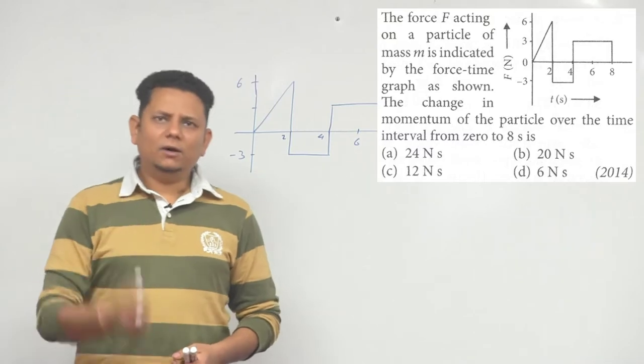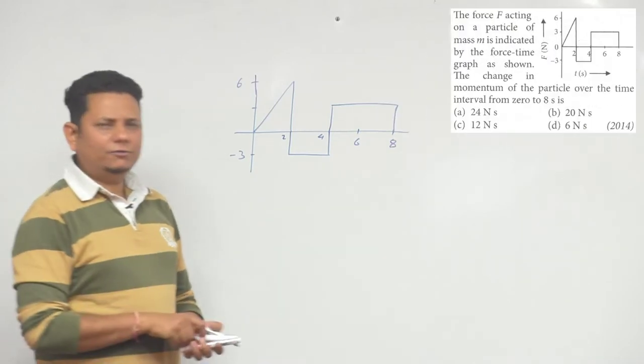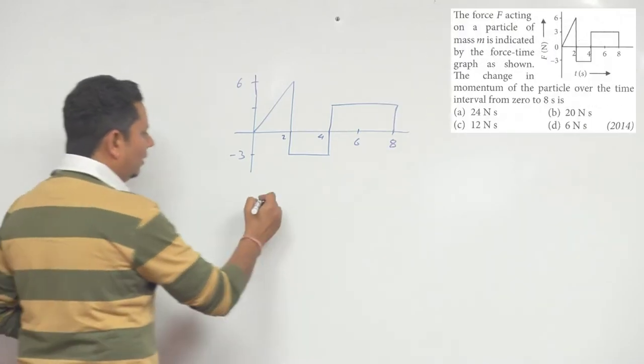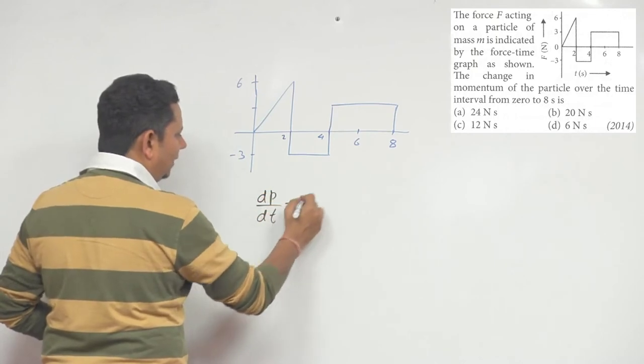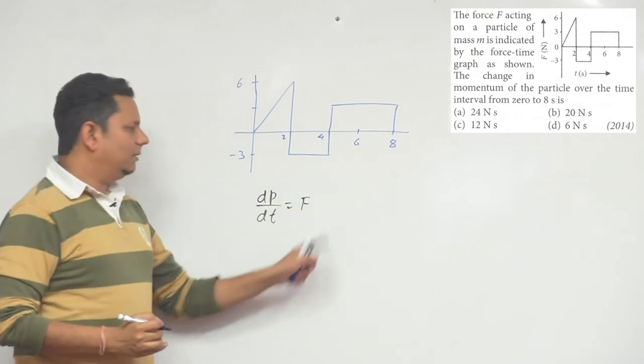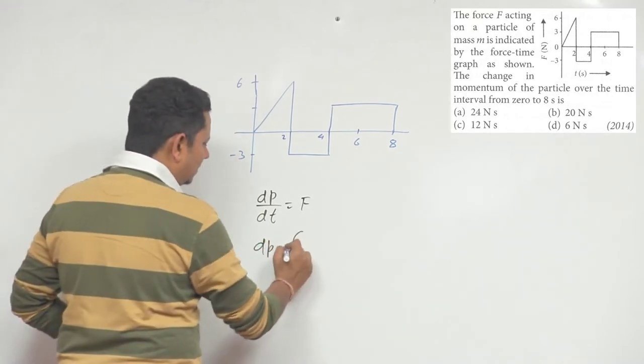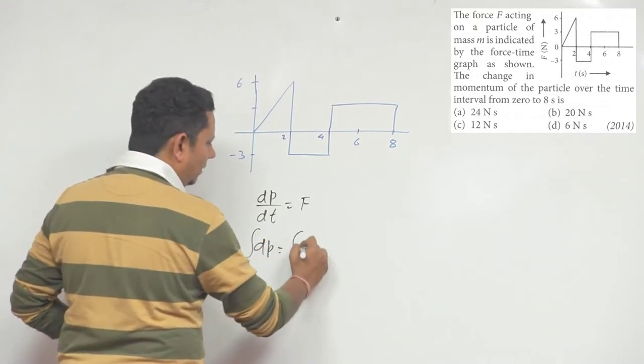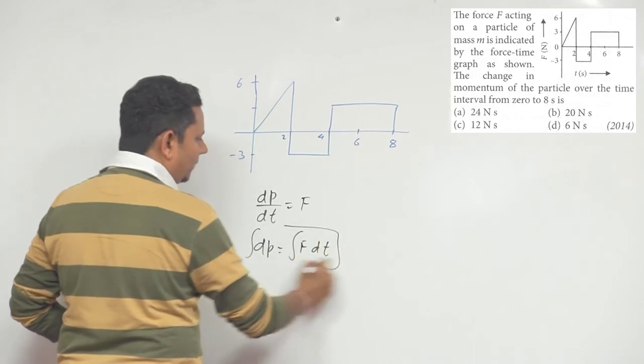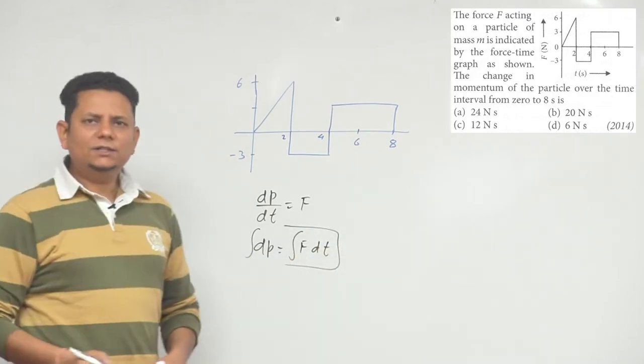Now we know from Newton's second law that dp/dt, the rate of change of momentum, is given as force. And here we can say dp, change in momentum, is nothing but area under the force-time graph. So change in momentum will be the area under the force-time graph.